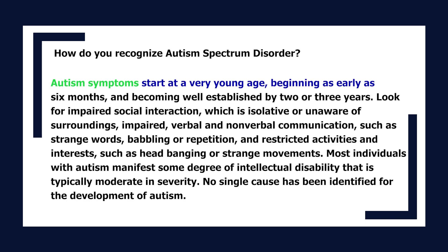Autism symptoms start at a very young age, beginning as early as 6 months and becoming well established by 2 or 3 years. Look for impaired social interaction (isolative or unaware of surroundings), impaired verbal and nonverbal communication (strange words, babbling, or repetition), and restricted activities and interests (headbanging or strange movements). Most individuals with autism manifest some degree of intellectual disability, typically moderate in severity. No single cause has been identified.